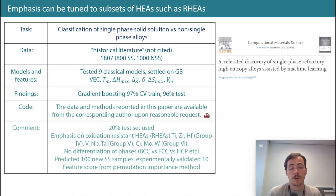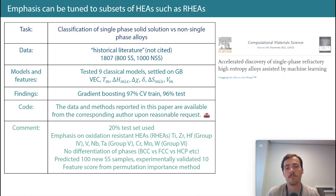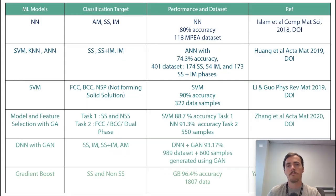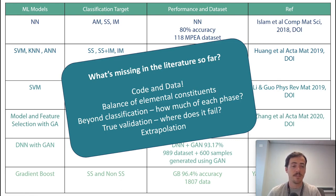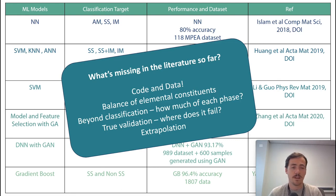Looking across all these papers — not even close to all of them but a representative half dozen — what can we learn? What's missing? Code and data, clearly — I didn't find a single paper that provided them, and that should be the norm. You need to provide all code and data so people can build on it, verify what you did, catch errors, and check for data leakage.